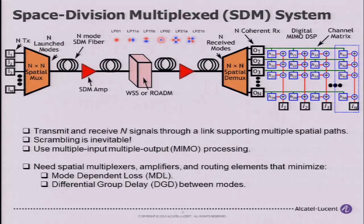Because these links can be long and have many components, scrambling is inevitable. You don't expect to be able to make a single-mode fiber link without having polarization mixing — the DSP always has a polarization demultiplexer in it. So at the receiver, after the spatial demux, we measure each mode coherently and then apply multiple-input multiple-output digital signal processing, which can undo the scrambling of the link.